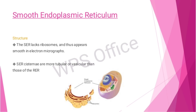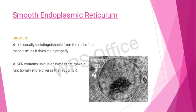The smooth endoplasmic reticulum lacks ribosomes and thus appears smooth in electron micrographs. Its cisternae are more tubular and vesicular than those of the rough endoplasmic reticulum. It is usually indistinguishable from the rest of the cytoplasm as it does not stain properly. The smooth endoplasmic reticulum contains unique enzymes that make it functionally more diverse than the rough endoplasmic reticulum.